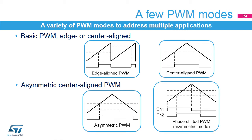A variant of center-aligned mode is asymmetric PWM mode, where two compare registers define the turning on and off of the PWM signal. This provides higher resolution for pulse width setting since turn-on and turn-off times are individually defined. It also allows generation of phase-shifted PWM signals for driving DC-DC converters based on the full-bridge phase-shifted topology. The timer provides two PWM signals with identical frequency, 50% duty cycle, and a phase shift varying from 0 to 180 degrees.